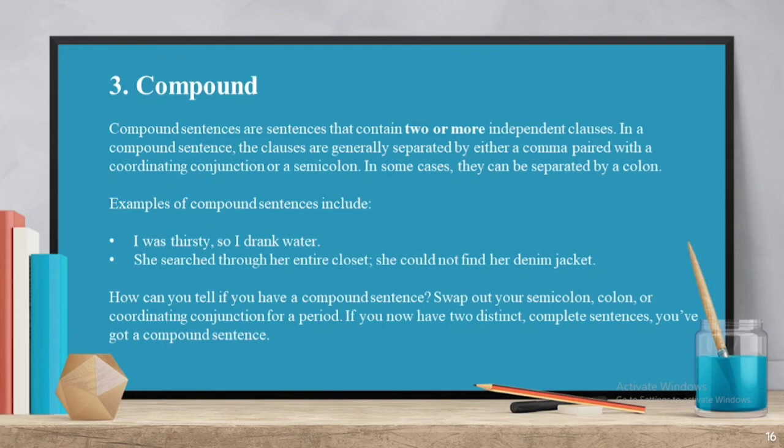How can you tell if you have a compound sentence? Swap out your semicolon, colon, or coordinating conjunction for a period. If you now have two distinct complete sentences, you've got a compound sentence.